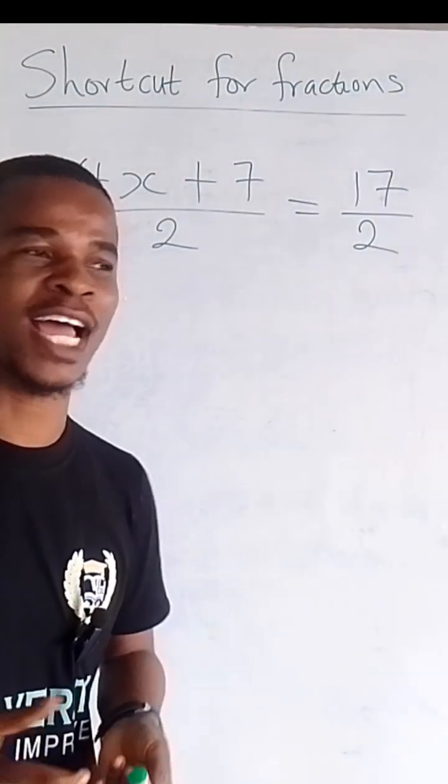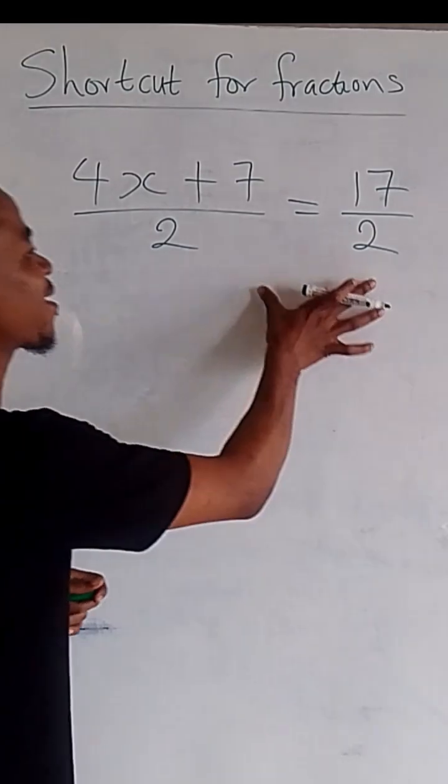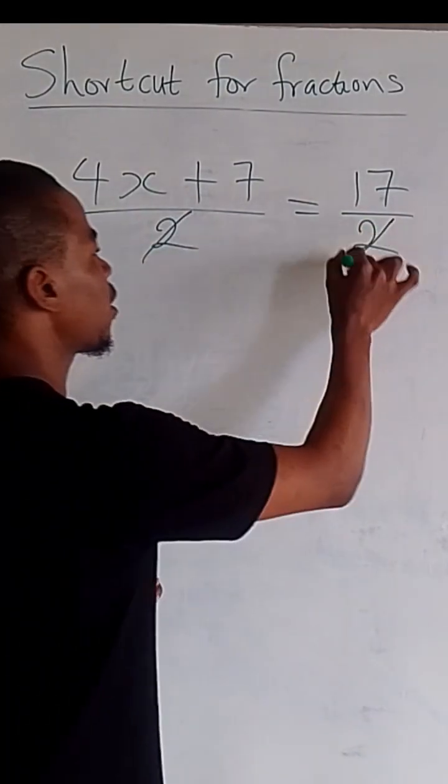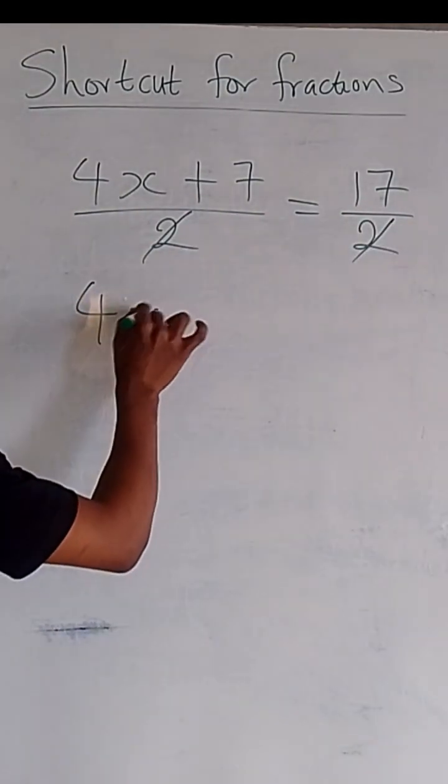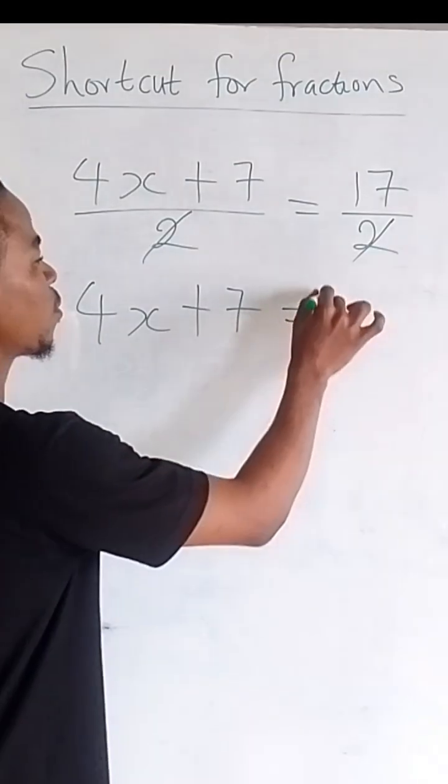When solving fractions and you have the denominator on both sides as the same, all you have to do is cancel out. And then you have 4x plus 7 equal to 17.